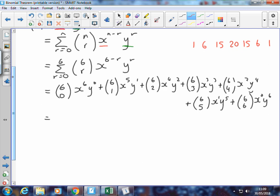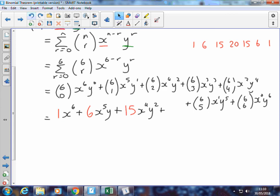So just to make the point, 6 choose 0 is 1. So we've got 1 times x to the power 6. We'll drop the y to the power 0, plus our next coefficient is 6. We've got x to the power 5y, plus, next coefficient is 15, and that's going to be x to the power 4y squared. So we keep going on here. Takes me a bit of time.